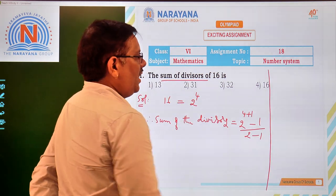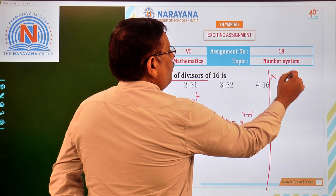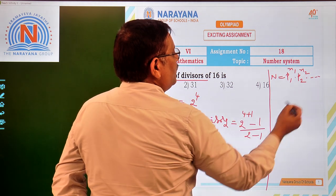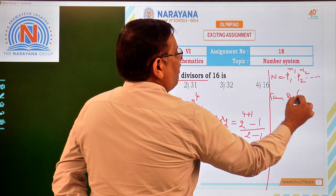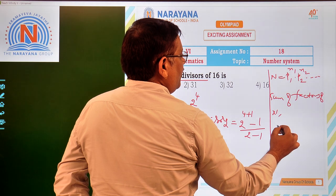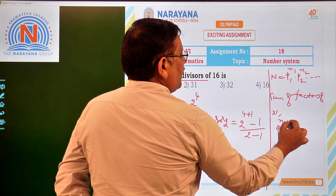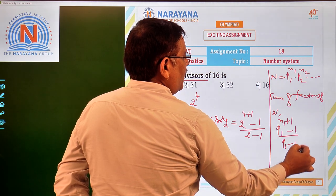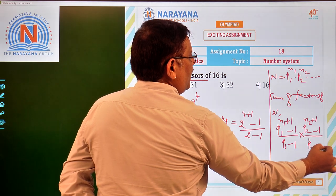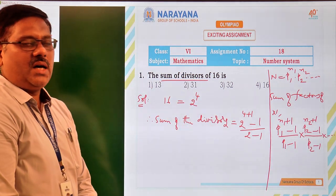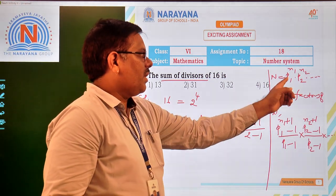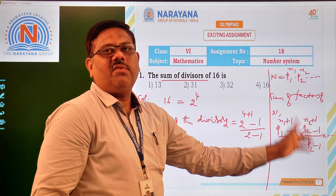Actually the formula is, if at all you have n as p1 power n1 into p2 power n2 and so on, then sum of factors of n is given by p1 power n1 plus 1 minus 1 by p1 minus 1 into p2 power n2 plus 1 minus 1 by p2 minus 1 and so on. That is the formula we have in finding the sum of the factors. p1, p2 are prime numbers, n1 are natural numbers. This is the formula for that. But anyway, here we have only one prime.